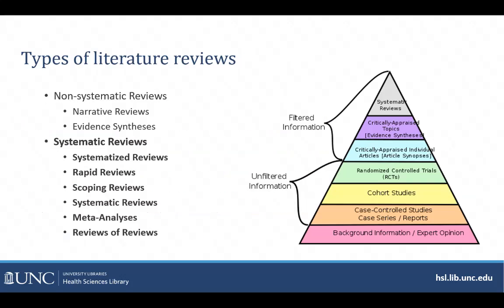When you look across the types of literature reviews, there are non-systematic reviews such as narrative reviews, and then there are a range of reviews that fall under the umbrella of systematic reviews. This includes systematized reviews, which may only follow some of the systematic review steps, rapid reviews and scoping reviews which have similar guidelines and steps but are conducted for different purposes, systematic reviews themselves, meta-analyses which are systematic reviews that also include a quantitative analysis of the data from the included studies, and reviews of other literature reviews including reviews of systematic reviews.